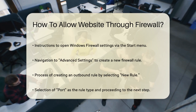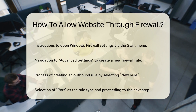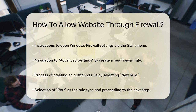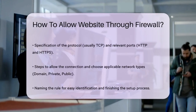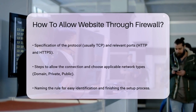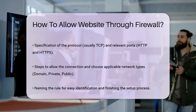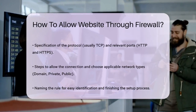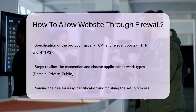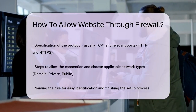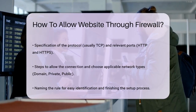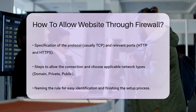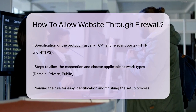For a website, you typically need to allow HTTP port 80 and HTTPS port 443. Click Next and choose Allow the connection. Click Next again and select the network types you want to apply this rule to: Domain, Private, Public. Give your rule a name, like Allow Example Website, and click Finish.